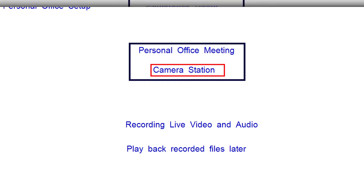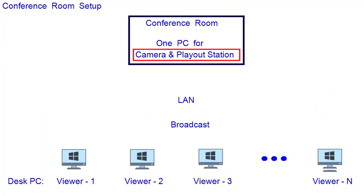This video system is useful for a conference room with a large audience. A camera station can be set up in the conference room permanently or temporarily. One or two webcams may focus on the slide presentation, one webcam may focus on the speaker, and one webcam may capture the audience. The live video allows employees to watch the conference from their desk computers, and the recorded video provides an archive for later review. The play out station can broadcast the live video so that many users can view it at the same time, with one PC used as both the camera station and the play out station.